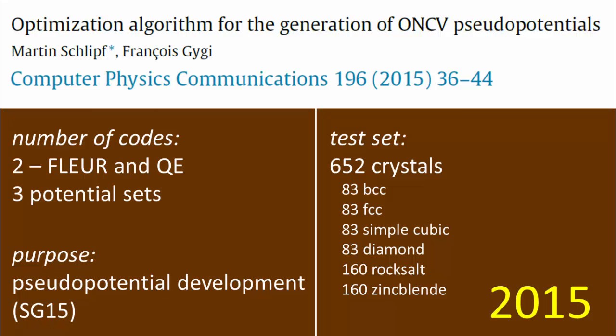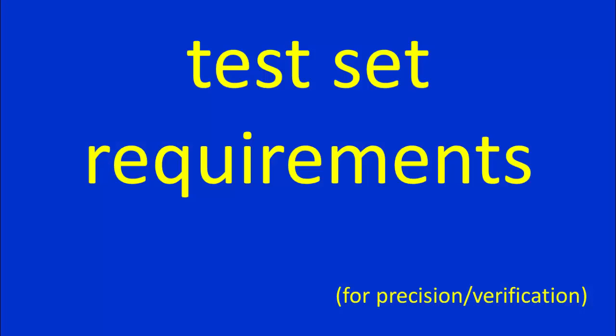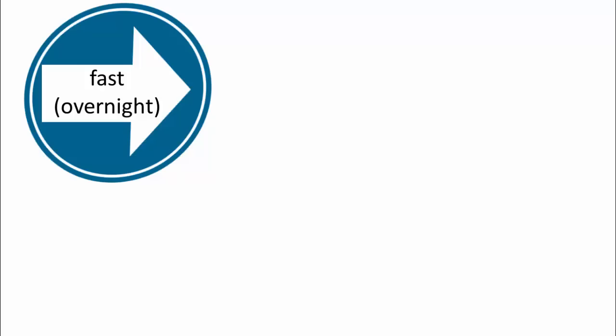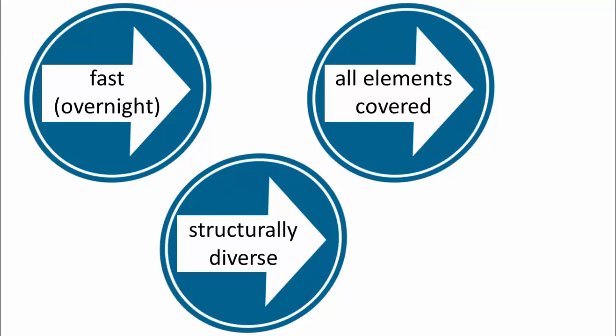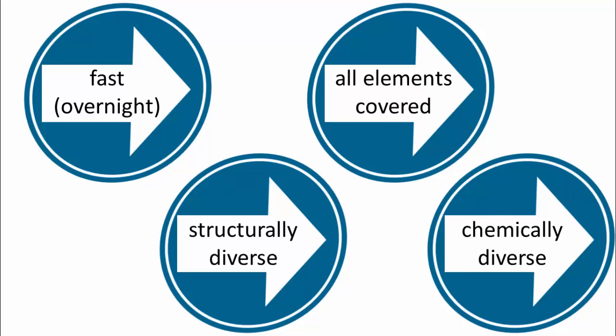Still, you can have some criticism on these sets of 450 or 650 crystals. So what would be the ideal minimal test set? The requirements that came out of our mailing list discussion are: you want a test set that runs very fast — ideally overnight — especially for code developers who want to prevent bugs and need to run it every night. It should cover all elements for pseudopotential generation. It should be structurally diverse — much more diverse than the 71-element test set — and it should be chemically diverse. Those are the four main criteria.